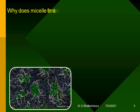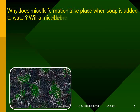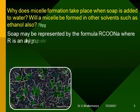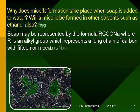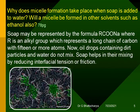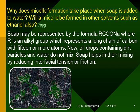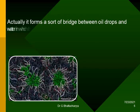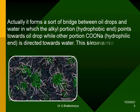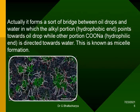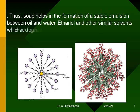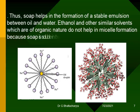Why does micellar formation take place when soap is added to water? Will a micelle be formed in other solvents such as ethanol also? Soap may be represented by the formula RCOONa, where R is an alkyl group representing a long chain of carbon with 15 or more atoms. Oil drops containing dirt particles and water do not mix. Soap helps in their mixing by reducing interfacial tension, forming a bridge between oil drops and water in which the alkyl portion, the hydrophobic end, points towards the oil drop while the COONa portion, the hydrophilic end, is directed towards water. This is known as micellar formation, and soap helps in forming a stable emulsion between oil and water. Ethanol and other organic solvents do not help in micellar formation because soap is soluble in them.